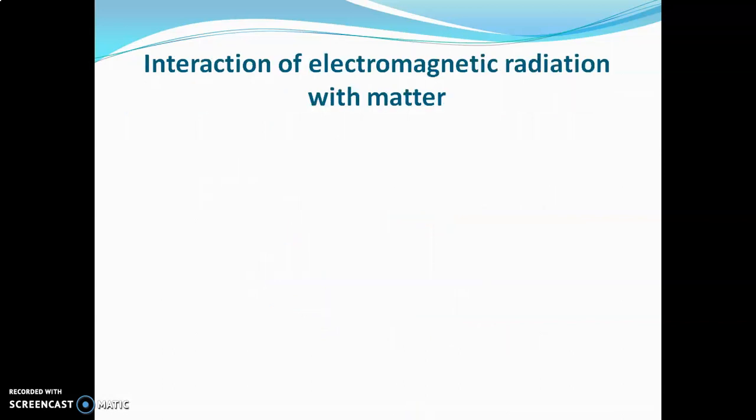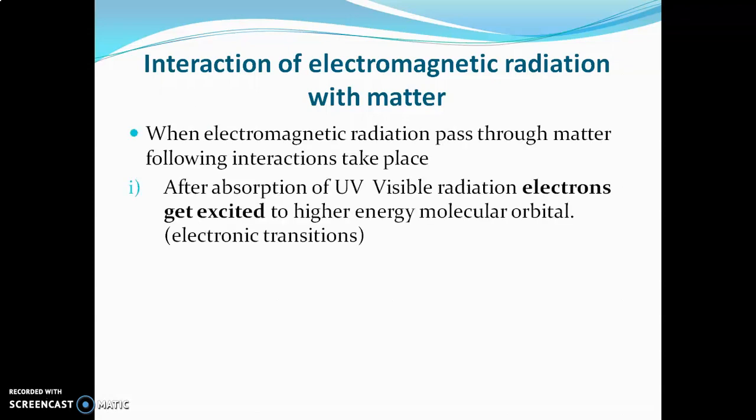Now we will see how exactly different electromagnetic radiations interact with matter. First, UV visible radiations — ultraviolet and visible radiation. When ultraviolet and visible radiations pass through a molecule, those radiations may get absorbed, and due to absorption, the electrons of that molecule will get excited to higher energy molecular orbitals. Here, electronic transition takes place.